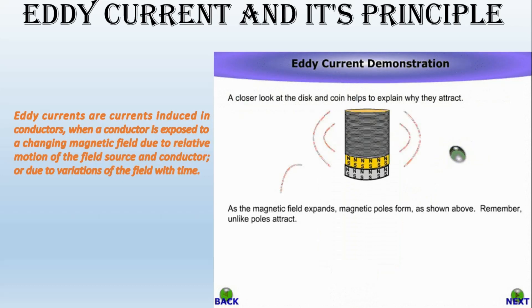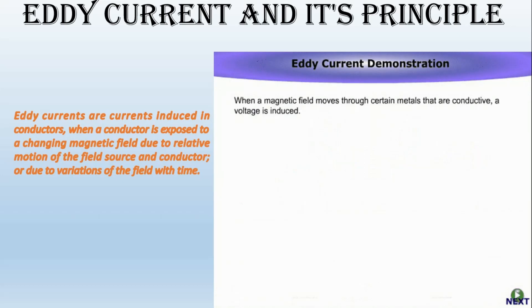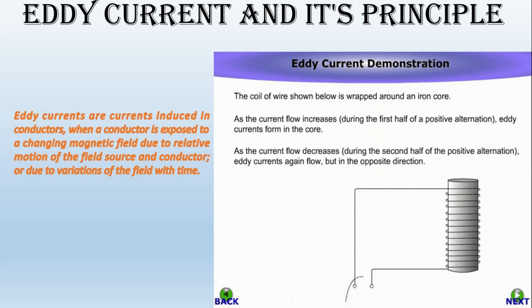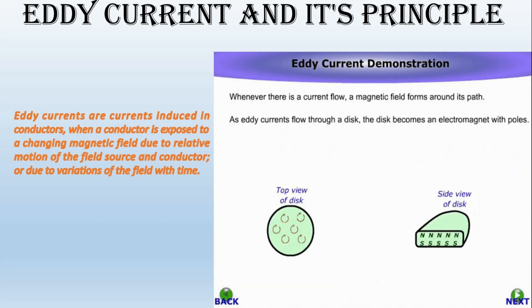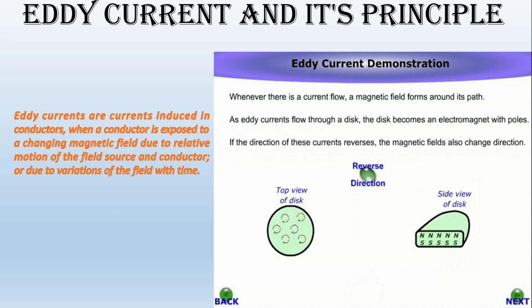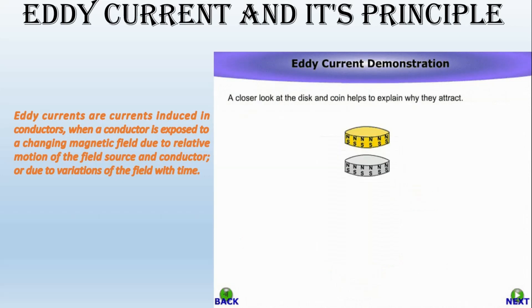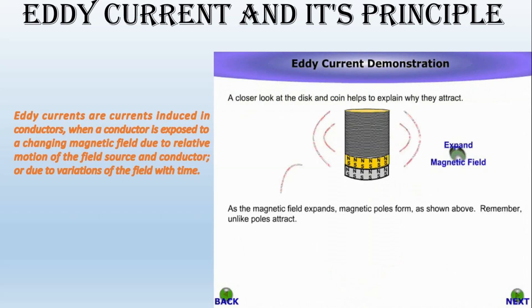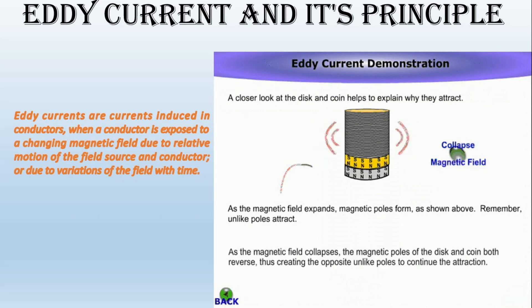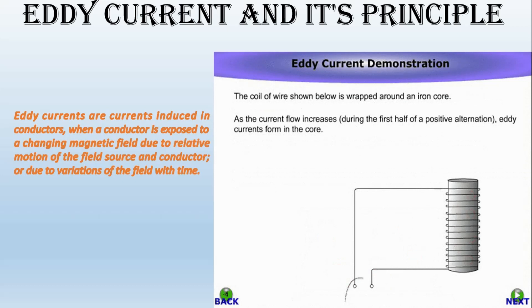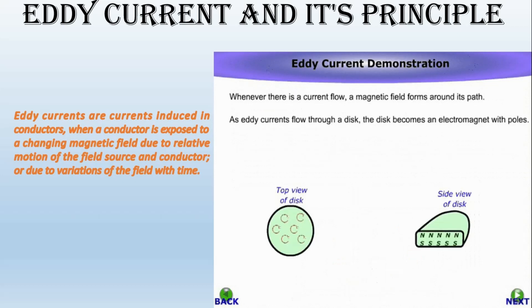Now we will see what are the advantages of eddy current testing. First, sensitivity to surface defects: able to detect defects of 0.5 mm in length under favorable conditions. Also, can detect through several layers — the ability to detect defects in multi-layer structures up to 14 layers without interference from planar surfaces. Next, can detect through surface coatings: able to detect defects through non-conductive surface coatings in excess of 5 mm thickness. Next, accurate conductivity measurements: dedicated conductivity measurement instruments operate using eddy currents.